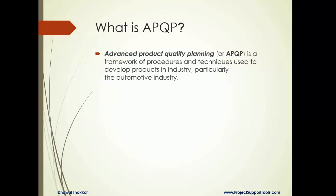What is APQP? APQP, or Advanced Product Quality Planning, is a framework of procedures used to develop products in industries — particularly in automotive industries. It started with automotive and is now used across versatile industries. It is a similar tool to Design for Six Sigma.